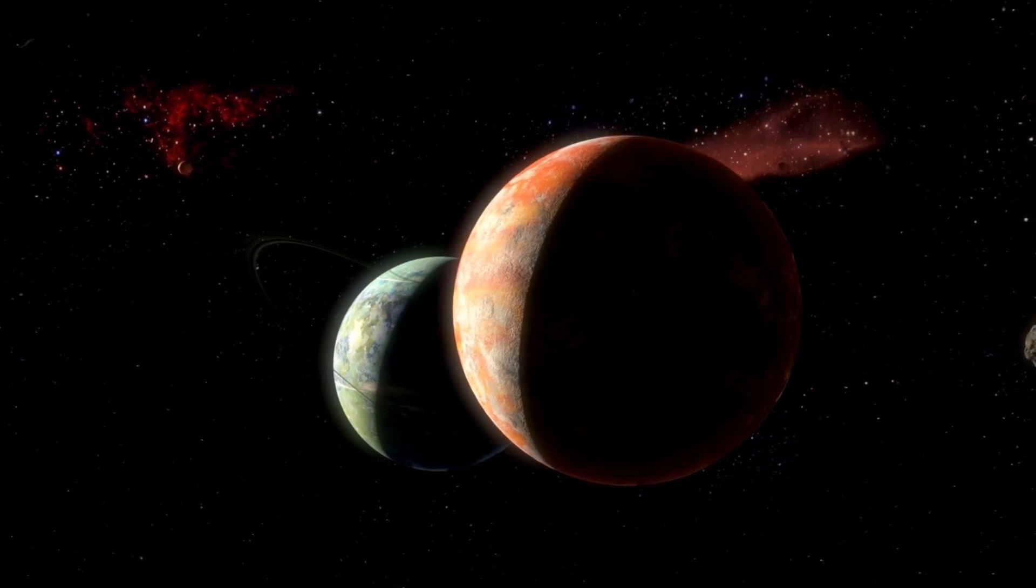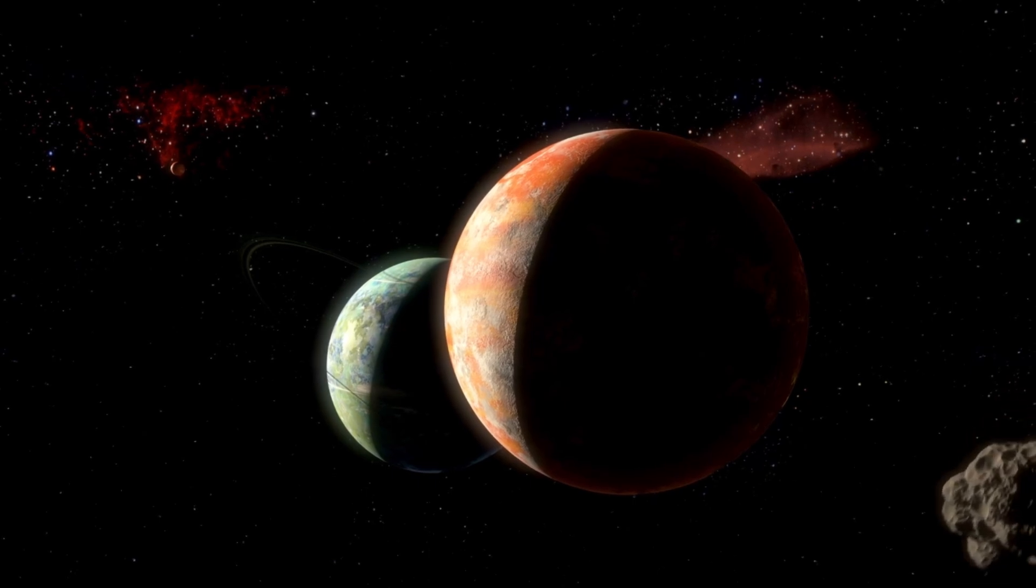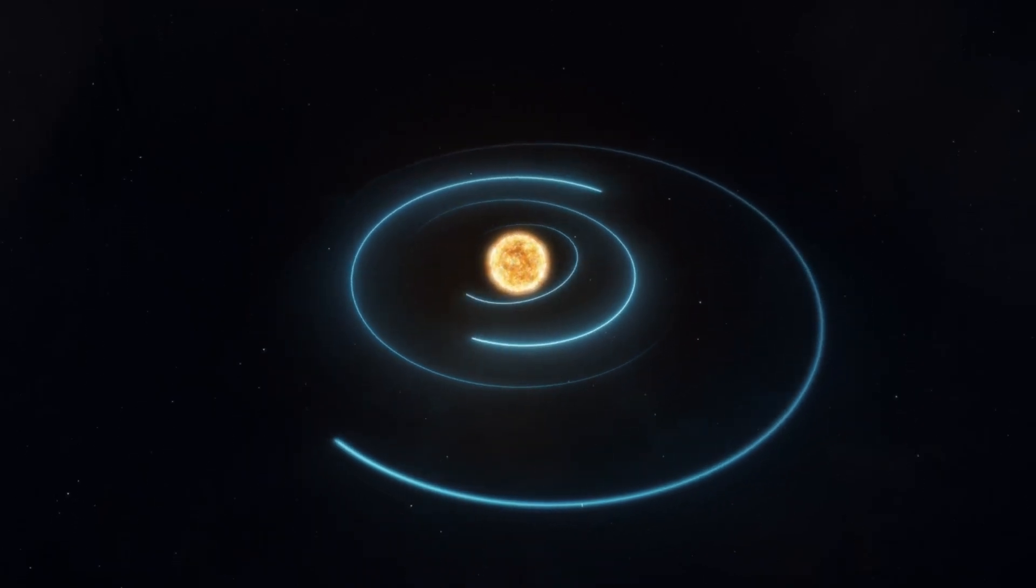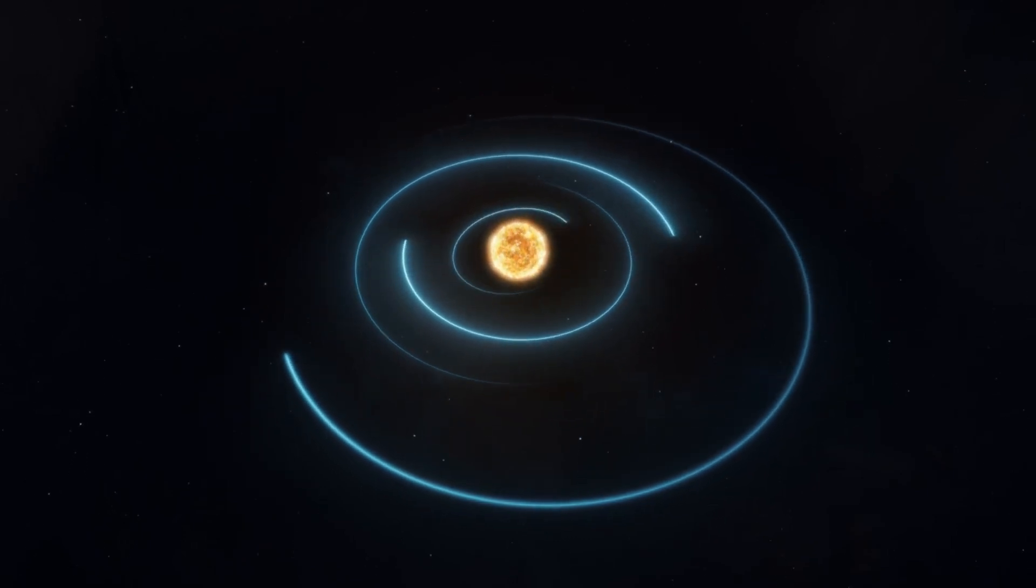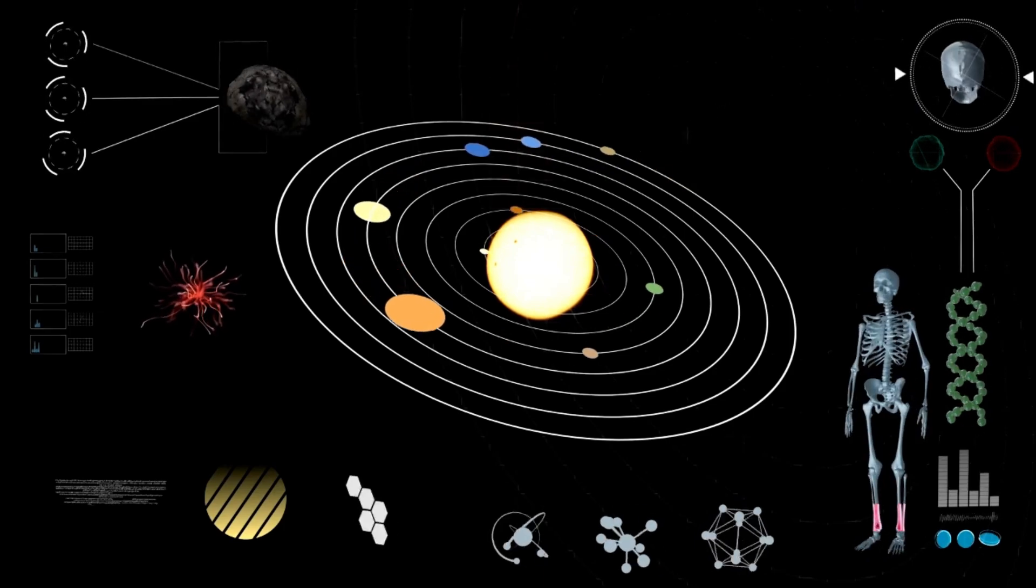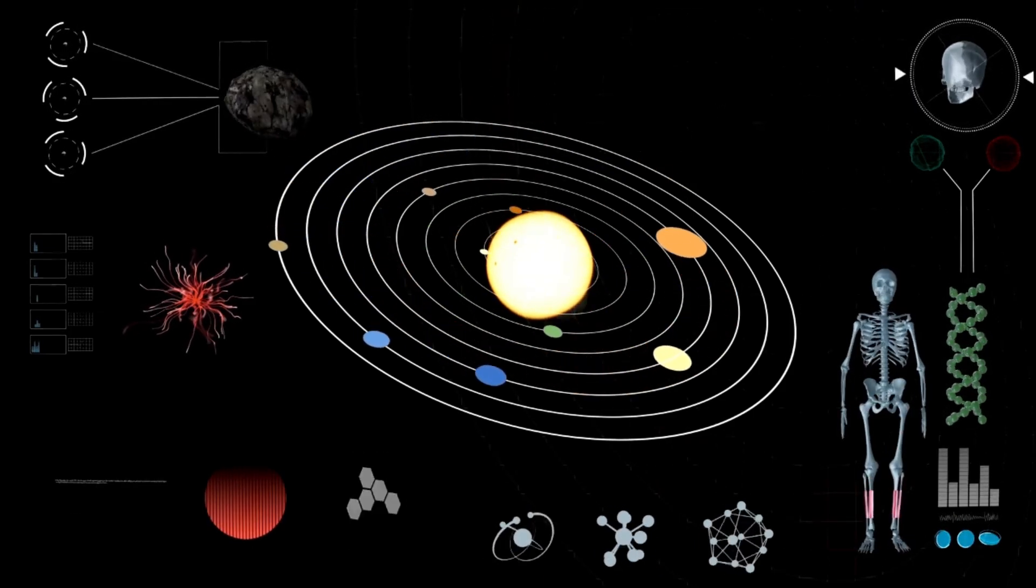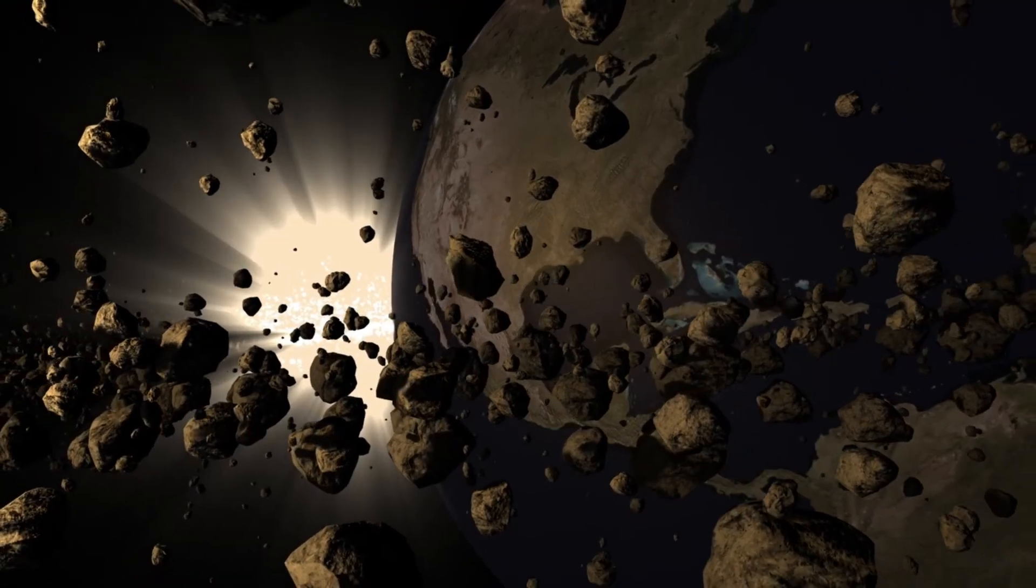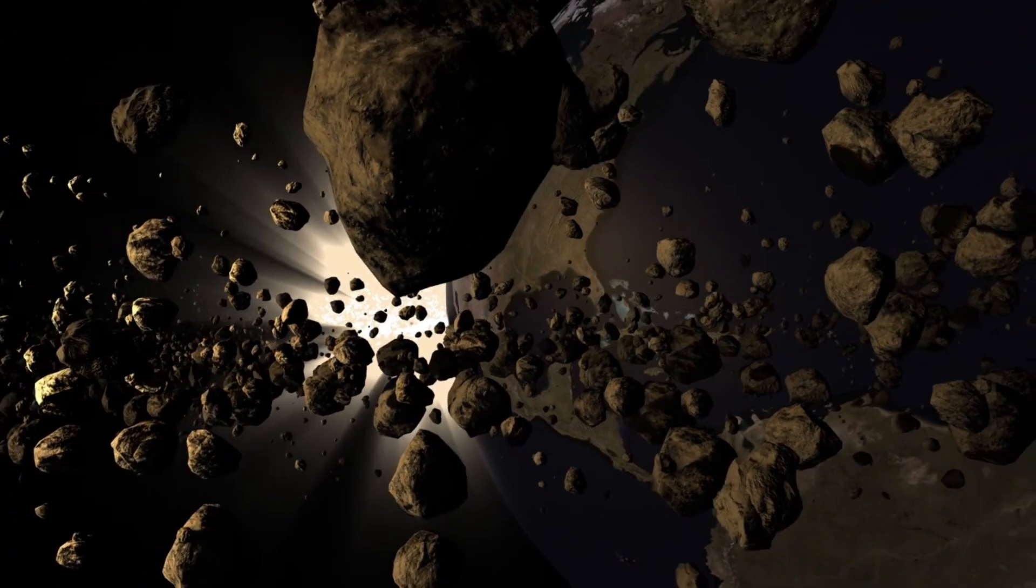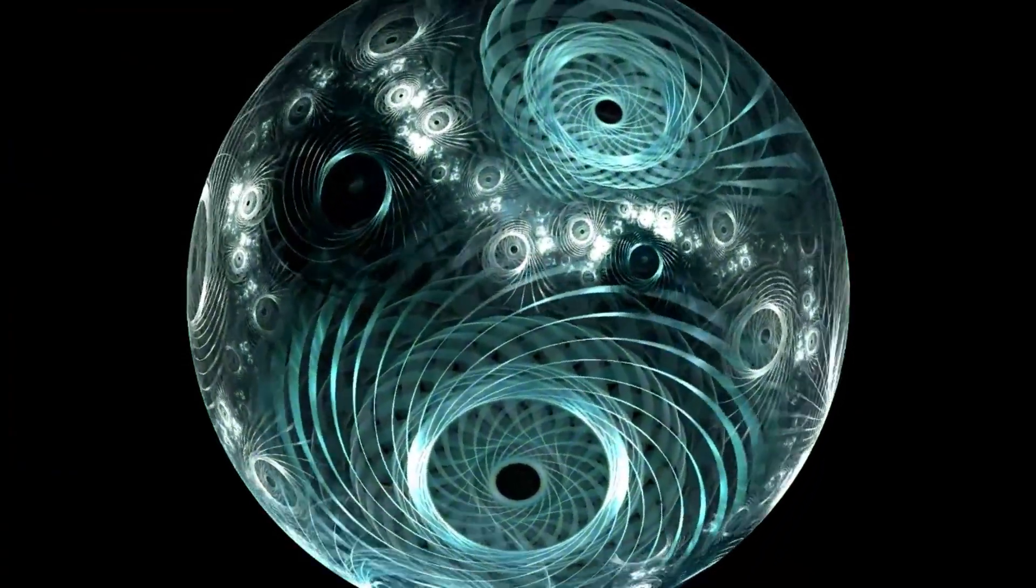The sheer size of the object that collided with Neptune hints at forces at play far beyond the planet itself. Perhaps gravitational interactions with unknown massive bodies lurking at the edges of the solar system, such as the theorized Planet 9, or even rogue stars passing nearby could occasionally disturb the delicate balance, sending massive objects hurtling inward. If such disturbances are more common than previously suspected, it means that all planets, including Earth, are periodically exposed to catastrophic impacts from deep space, though at vastly differing time scales.